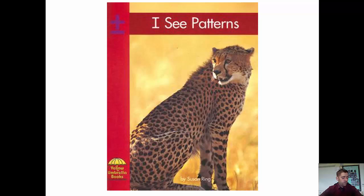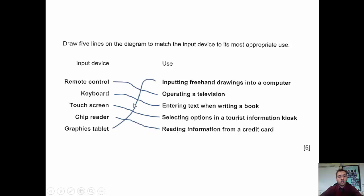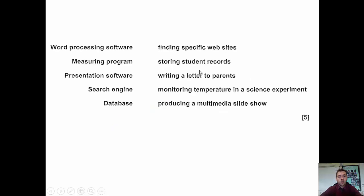This one is a risk to use, but it has seemed to be a pattern in the exam. For example, we know a remote control operates a television, and keyboard is entering text. If you know two answers in a matching question and it's following this pattern, go with it — you might pick up some easy marks. Similarly, word processing is used to write a letter to parents, and presentation software is for producing a multimedia slideshow.